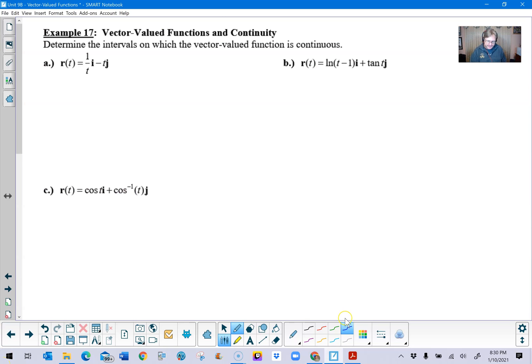So here we are at example 17. The directions say determine the intervals on which the vector-valued function is continuous. Now, to be honest, there's going to be a lot of similarities between this example and a previous example that we talked about where you were finding the domain.